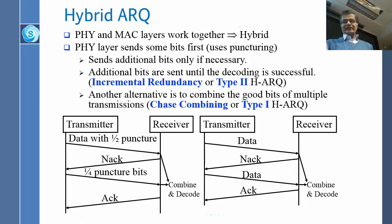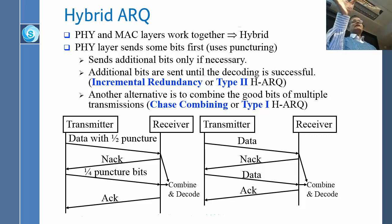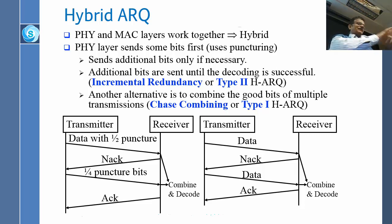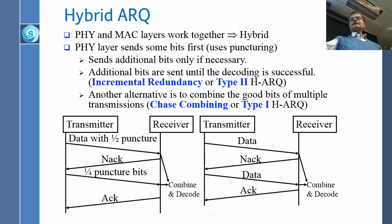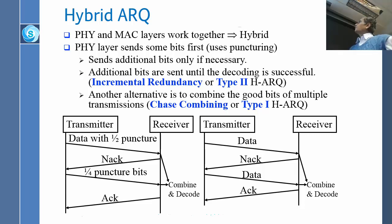There are two ways you can do it. One way is this incremental redundancy approach. The second way is that you just send the data again. The second time, some other bits are bad — you know which bits are bad because a bit is really not clear whether it is 0 or 1. You can combine those two transmissions and take the good bits from each. This is called chase combining, a Type 1 HARQ. The incremental redundancy approach is Type 2 HARQ.